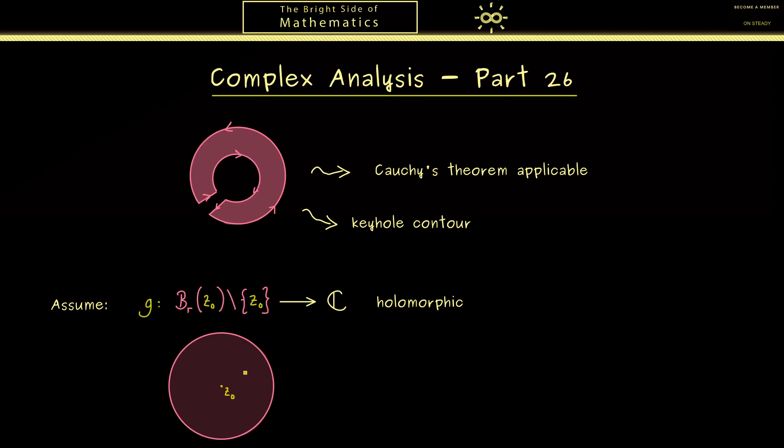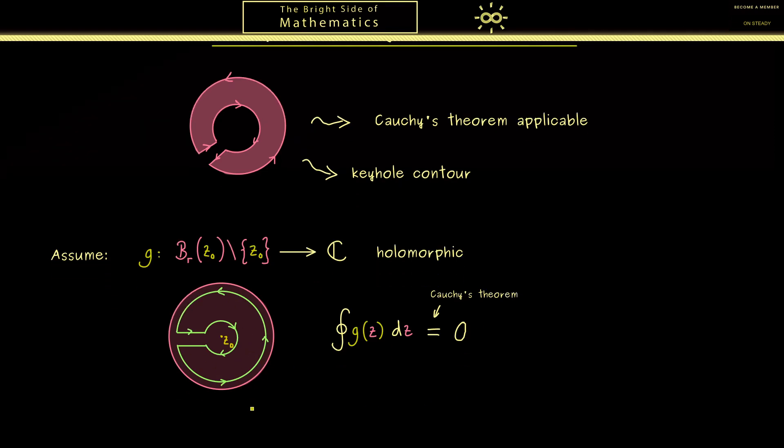We have our disk here with the exception point z0 in the middle. Then we consider a contour integral in this domain that looks like such a keyhole. So it's a closed curve inside the domain of g. Therefore, as we learned in the last video, Cauchy's theorem tells us that the contour integral along this curve is 0.